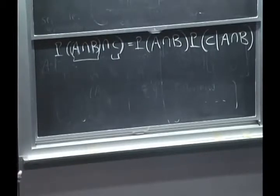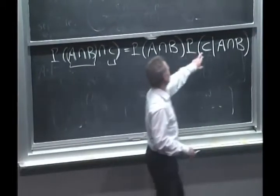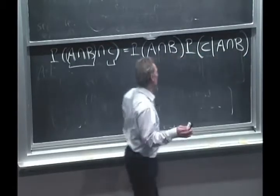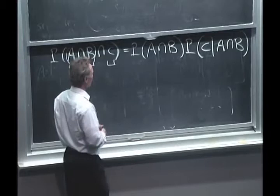So this is just the definition of the conditional probability of an event given another event. That other event is a composite one, but that's not an issue. It's just an event.